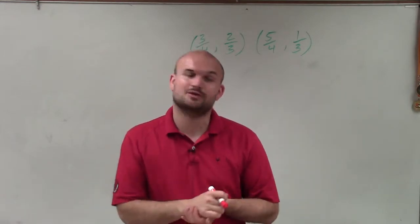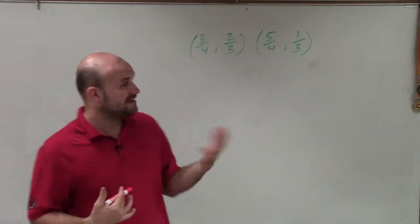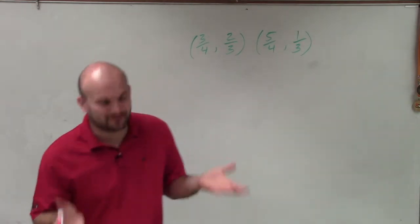Welcome! What I'd like to do is show you how to find the slope between these two points. I have 3 fourths comma 2 thirds and 5 fourths comma 1 third. I love this problem because it's dealing with fractions.